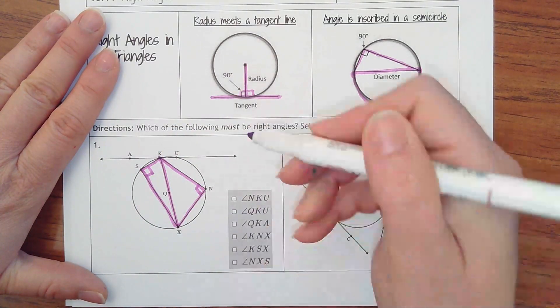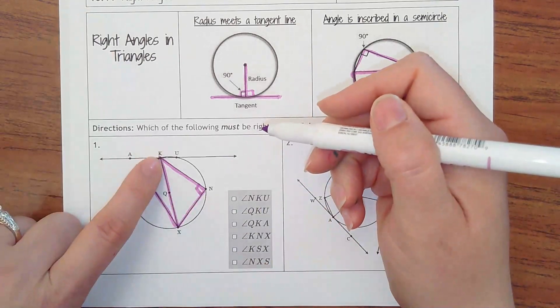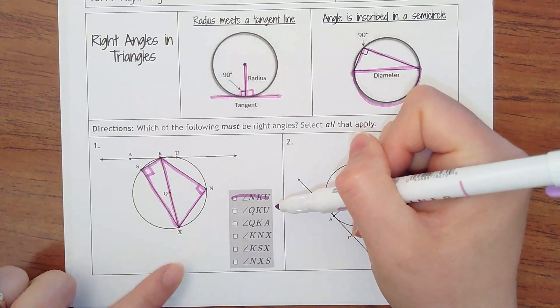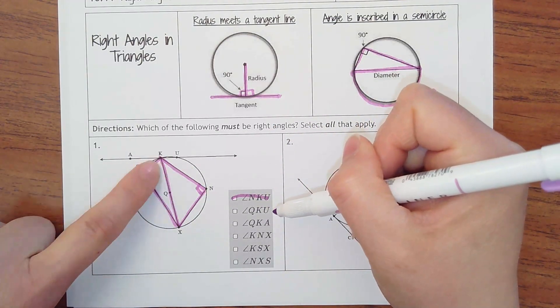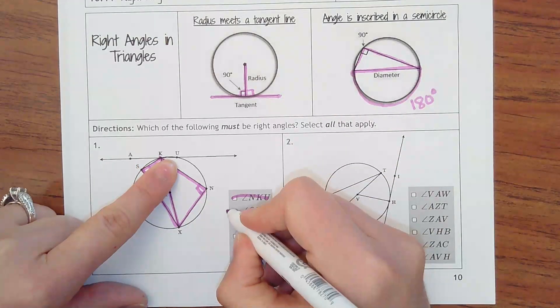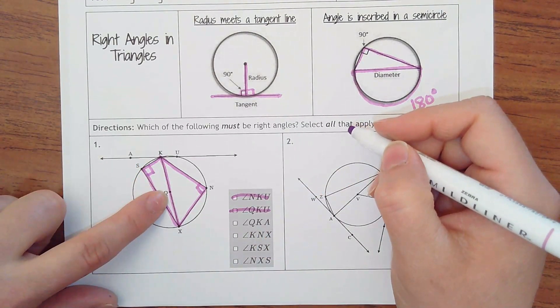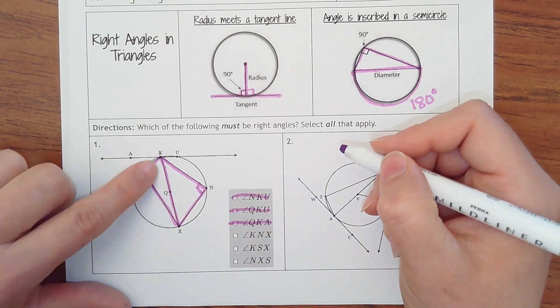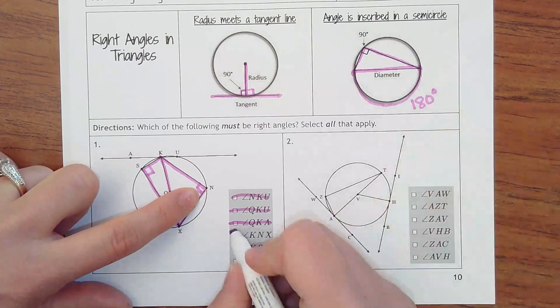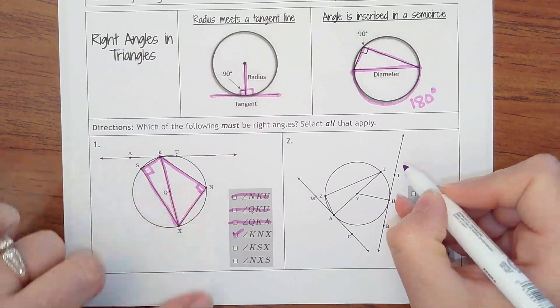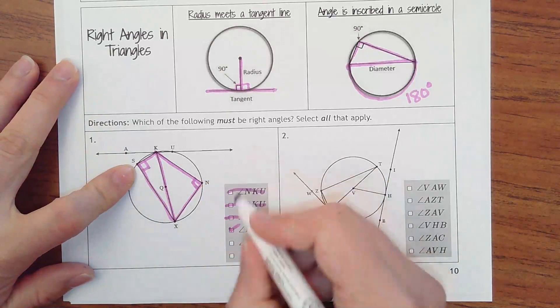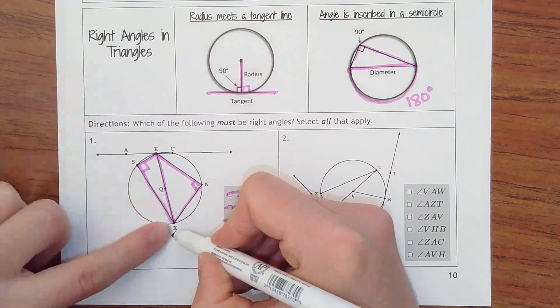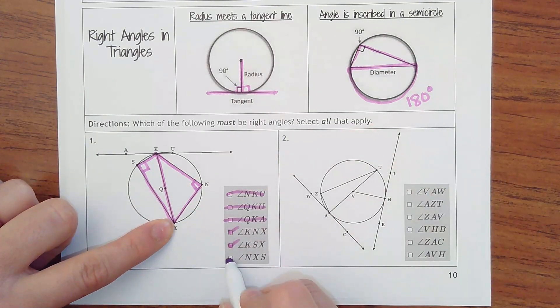Angle NKU, N to K to U would be here. Definitely not. QKU, Q K U. It's close, but no, because we said that's a secant line not a tangent. QKA would be here. Same thing, it's close but no. KNX, yes. KSX, yes. And the last one is NXS. No. So just those two.